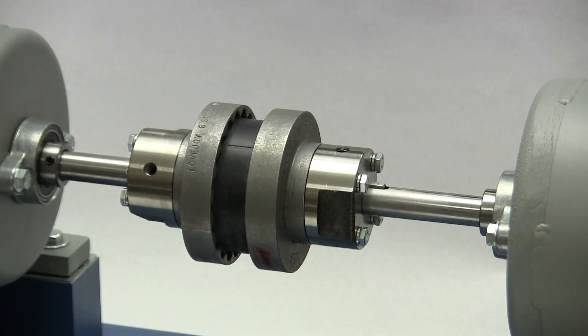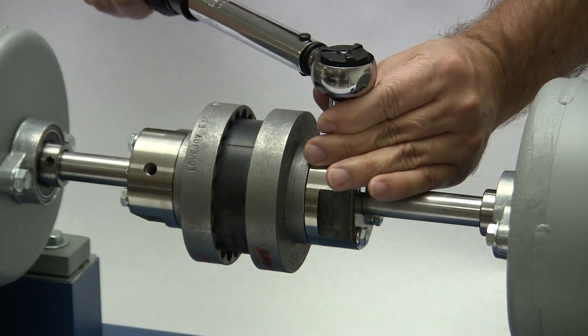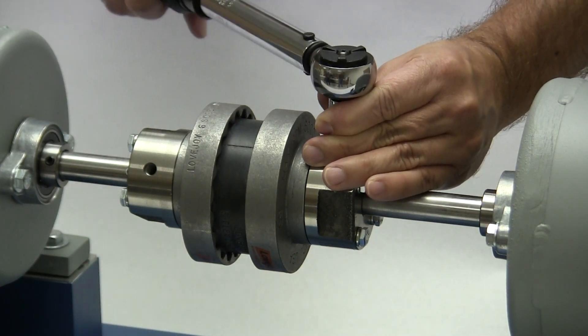With the alignment check completed, we can now tighten the set screws in the second hub to the torque specified in the installation guide.